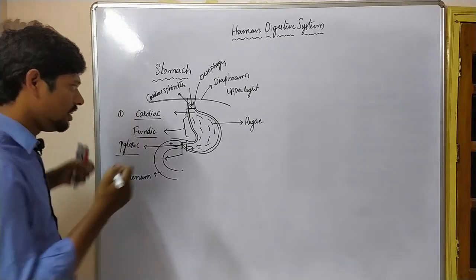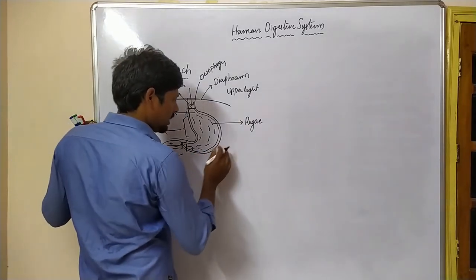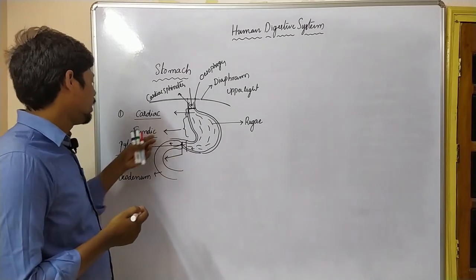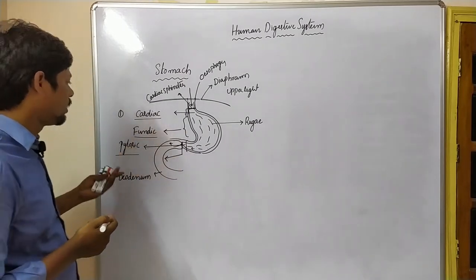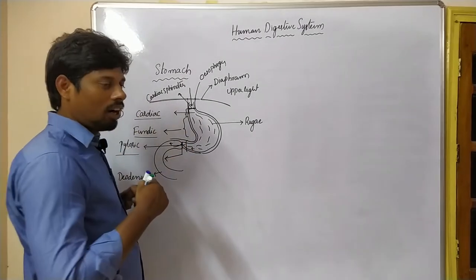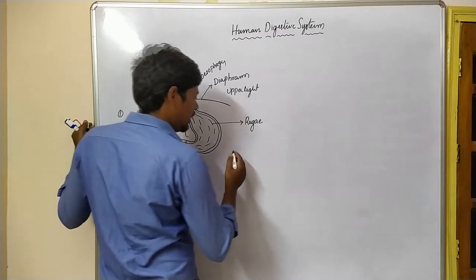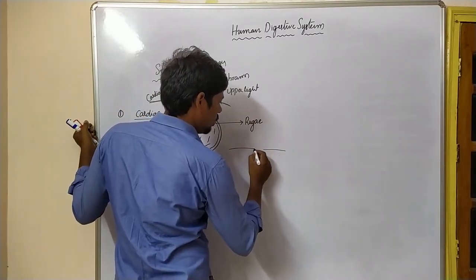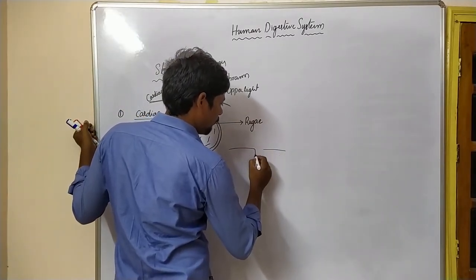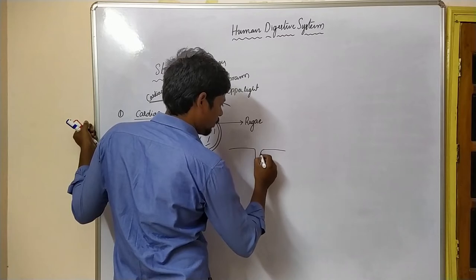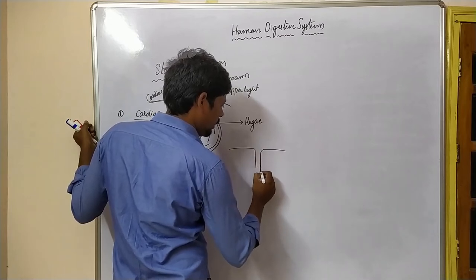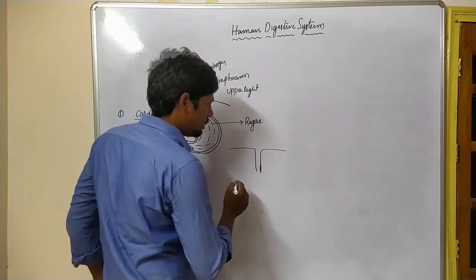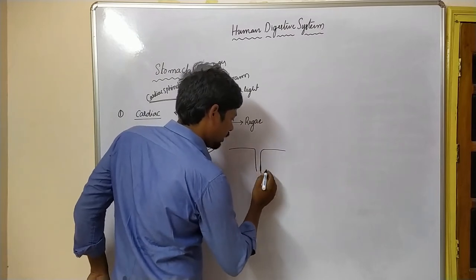If we section the cardiac and fundic regions of the stomach, we can see the different layers. There are many different types of cells present in the stomach. Let us see.